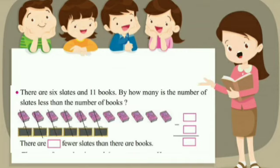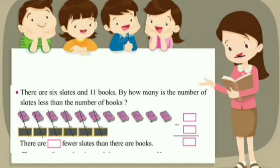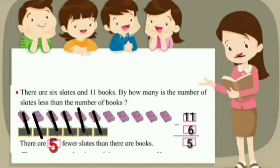Next example: there are six slates and eleven books. By how many is the number of slates less than the number of books? Saha patya wa akra pustakya hai. Pustakhan peksha patya kiti kami ahe? Eleven minus six is equal to five. There are five fewer slates than there are books.